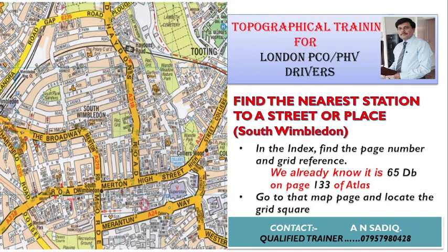Our next point is how to find the nearest station to a street or place — for example, South Wimbledon. We need to find the page number and grid reference from the index. We already know it is 65 DB on page 133 of the master atlas of greater London. We go to that page, and here I have zoomed in on page 133, and we will try to locate the grid square.